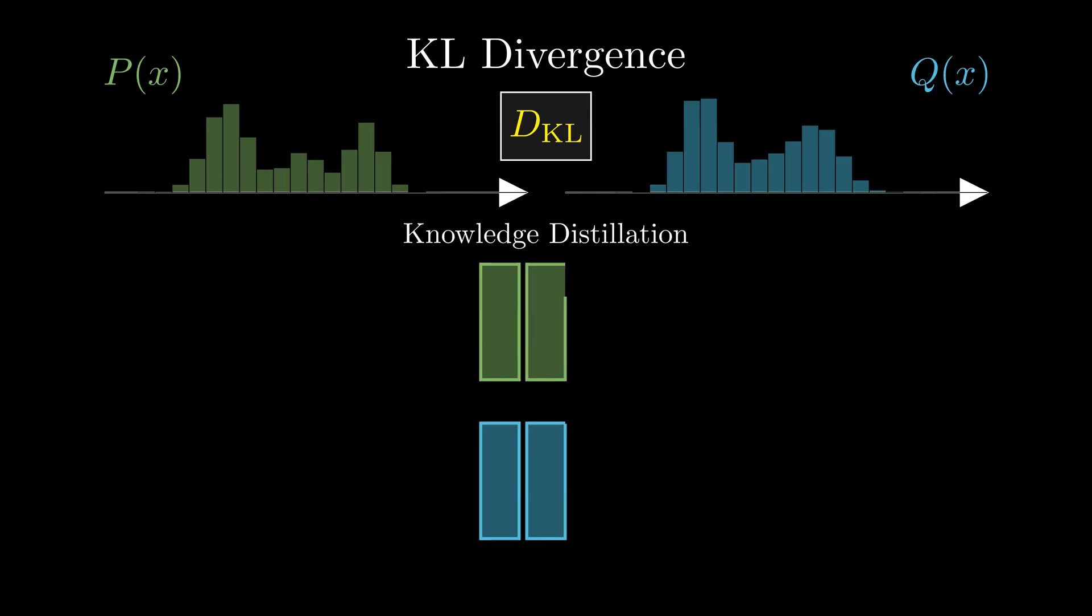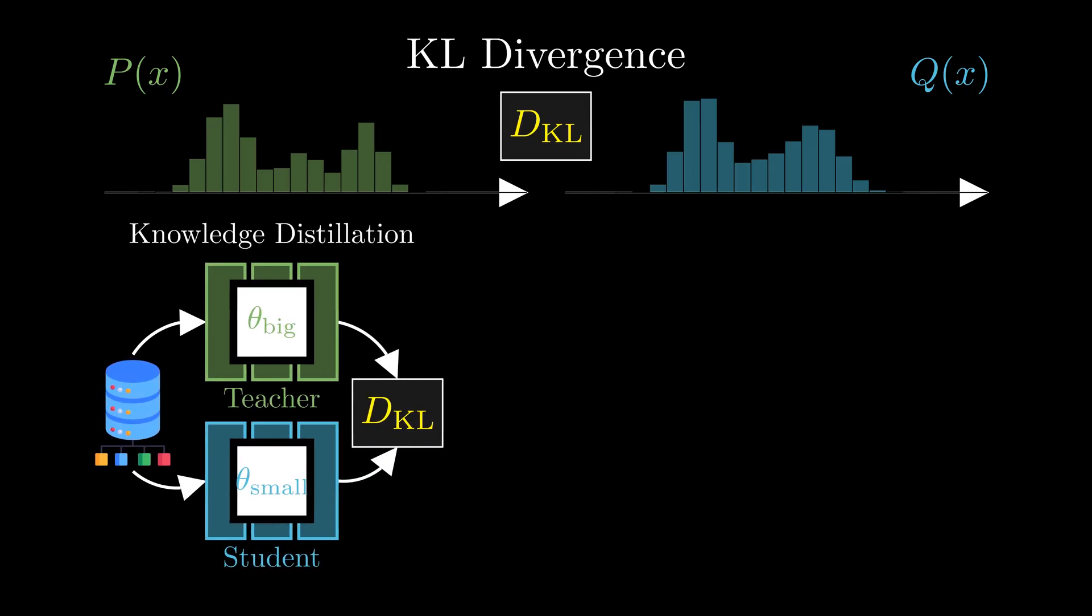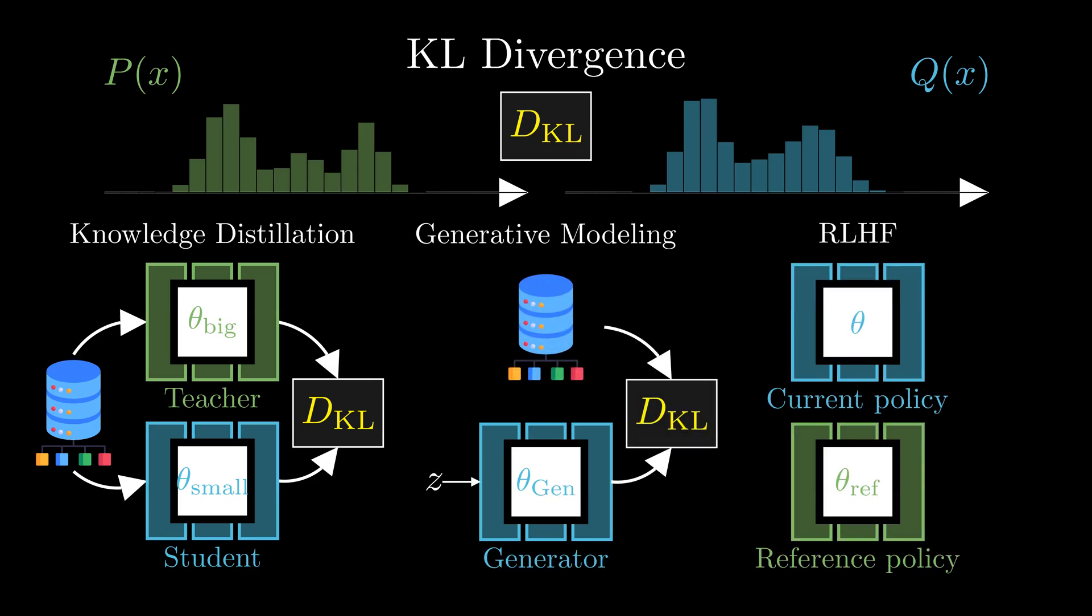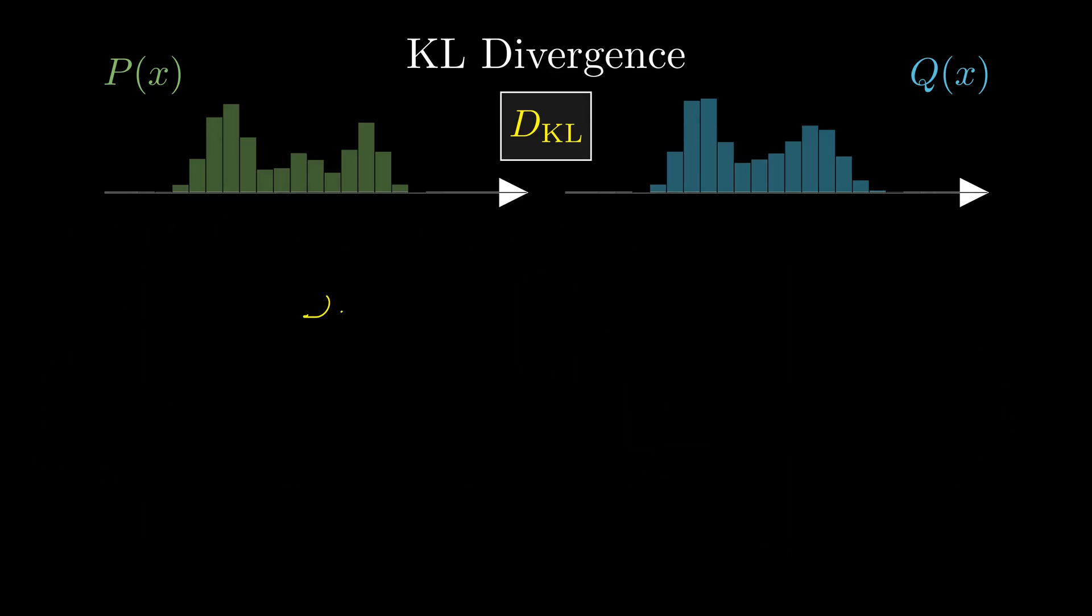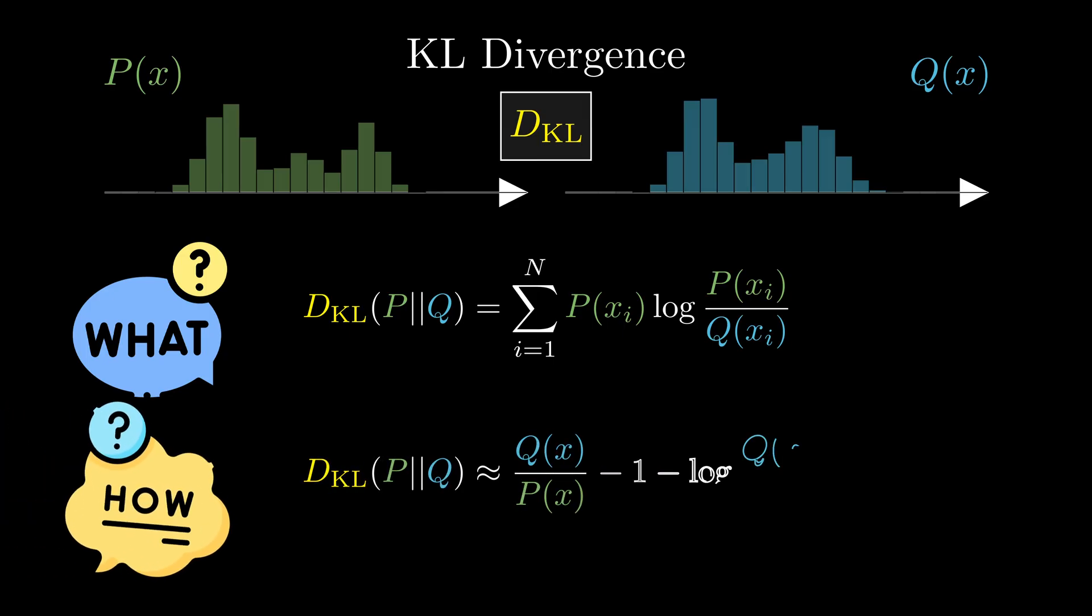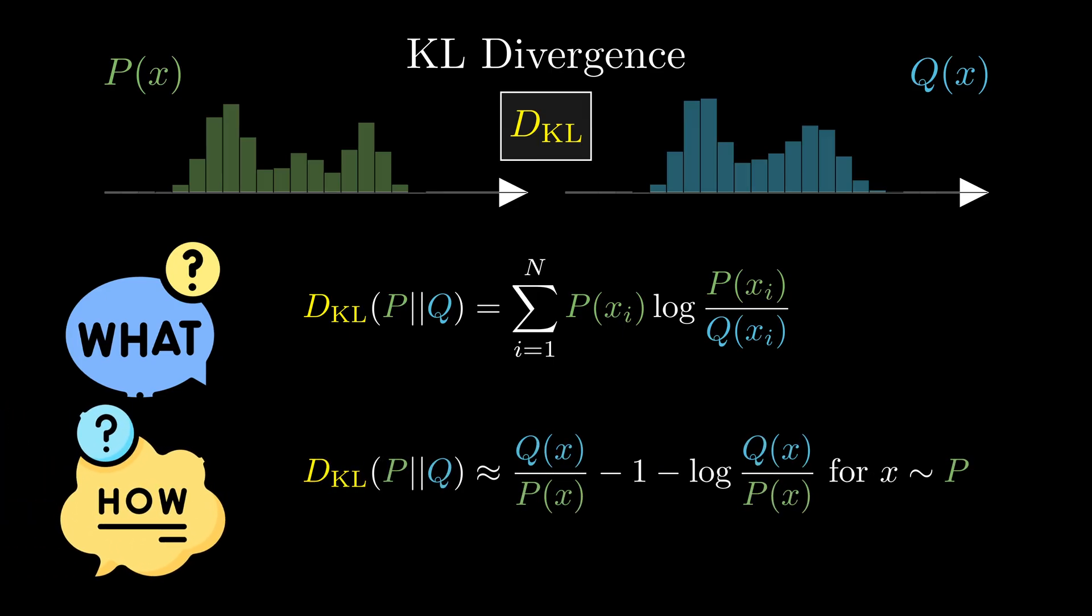We use it to distill the knowledge from large models into smaller ones, train generative models that approximate the data distributions, and prevent language models from drifting too far during alignment. We will start with an intuitive explanation of what KL divergence really means, and then walk through a simple and efficient way to compute it.